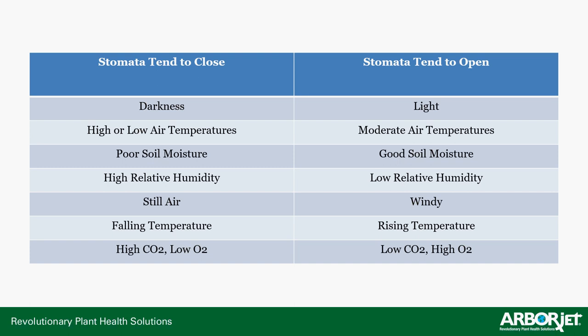Still air also causes closure — moving humid air is more tolerable than still humid air because at least moving air has a little more space for water vapor. Falling temperatures slow processes down, so less water is needed and stomates can close. And if internal leaf tissue has a high CO2 and low oxygen concentration, it doesn't need to keep stomates open for more CO2 — it needs to work down the overabundance first.